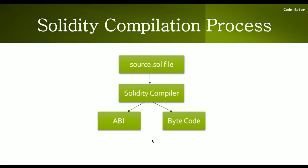The second part generated is the bytecode. This bytecode is the code that actually gets deployed on the Ethereum blockchain — your entire source.sol file is not deployed, only the bytecode gets deployed on the blockchain. This bytecode actually consists of instructions related to your smart contract.